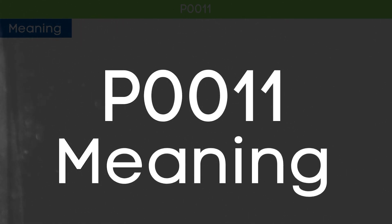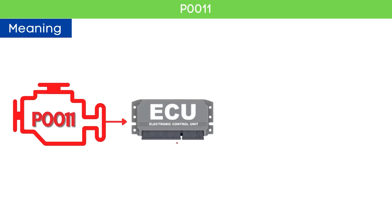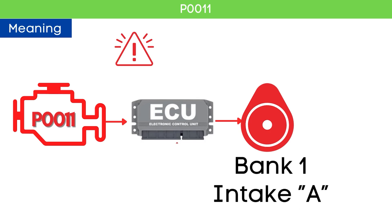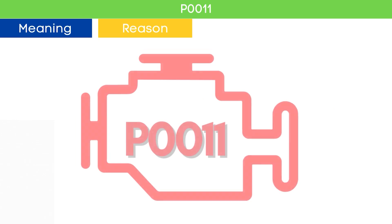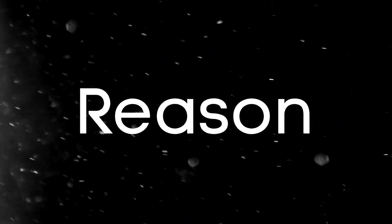The P0011 Code indicates that the ECM has detected that the camshaft timing for Bank 1, specifically the intake camshaft, is over-advanced. Now let's learn why P0011 was triggered.